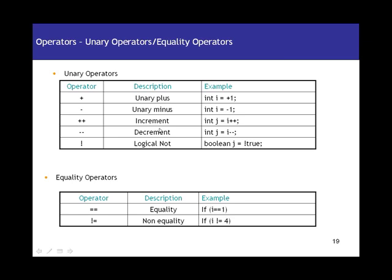How much does the increment or decrement change the value? In the example, int j equals i plus-plus — this increments the value of i by 1. So if the value of i is 4, after this statement the value of i will be 5. We can also write it as plus-plus i, and there is one small difference between i plus-plus and plus-plus i.